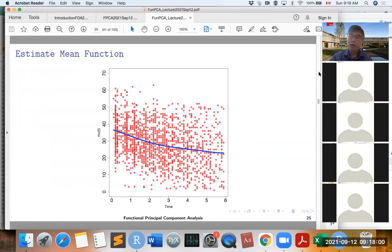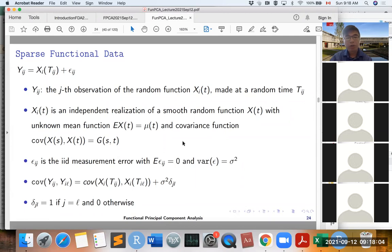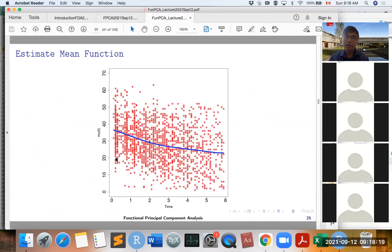So now, what we can do is that because we assume that all curves X_IT have a common mean μ(T), we can pool the observations from all subjects. These various circles are the observations from all subjects. Then we can estimate the mean function μ(T) based on all this data. So we estimate μ(T) by pooling all the data together.